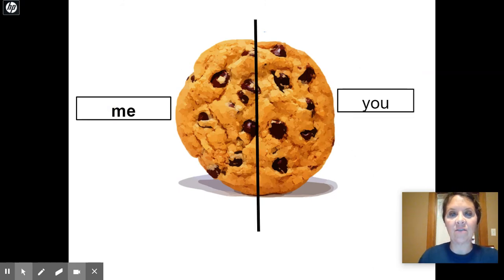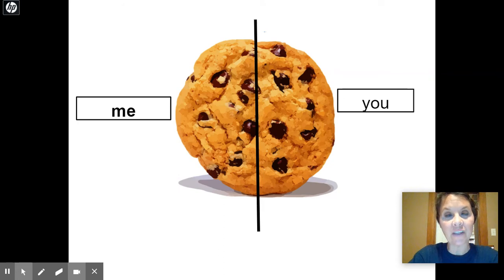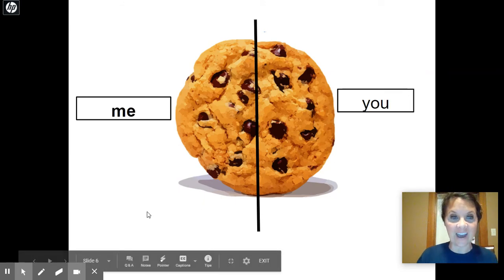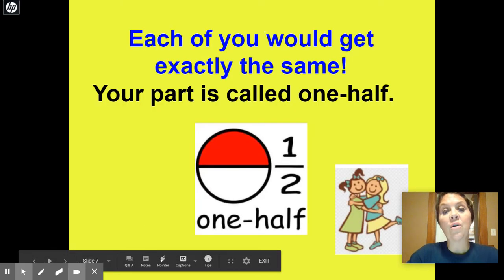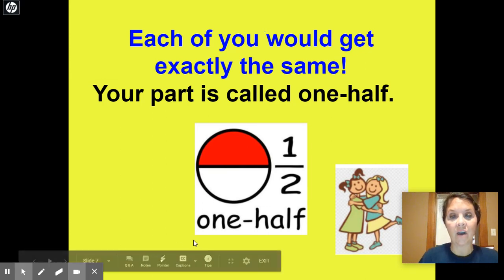There we go. This time, I get this part of the cookie, and you get that part of the cookie. Is that fair? Did we get equal amounts or equal shares? Did I share equally with you? Yes or no? I gave you an equal amount of the cookie. You have part, and I have part, and the two parts are the same size. That's fair. So, if each of us would get exactly the same, your part is called one half, and my part is called one half.